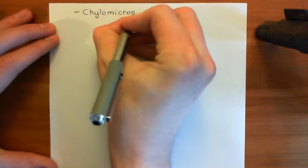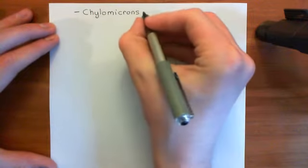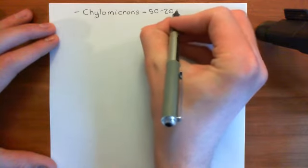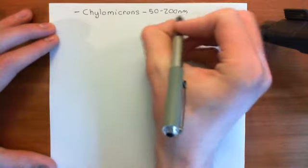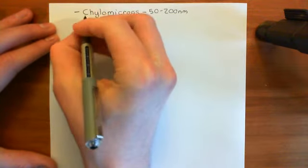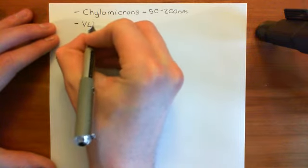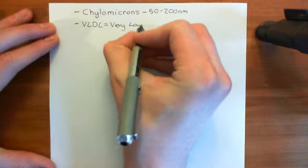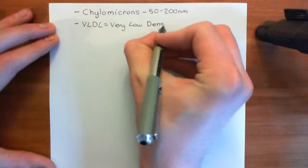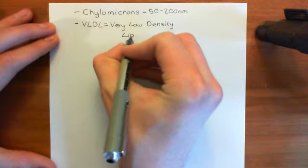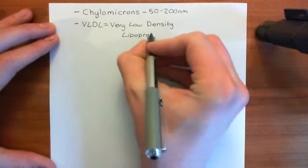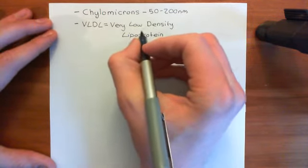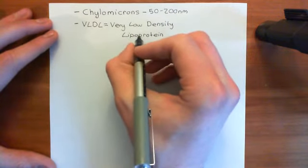Chylomicrons are the biggest lipoproteins, with a diameter of around 50 to 200 nanometres — big things compared to the others. Next up we have the very low density lipoproteins, VLDLs. What does 'very low density' mean? Basically it refers to the ratio between how much protein you have within the lipoprotein and how much lipid you have.